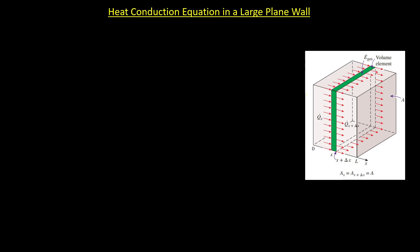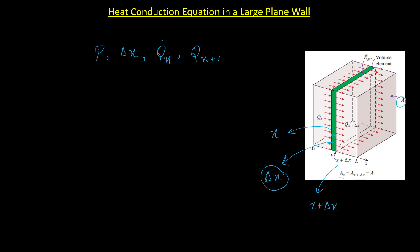For finding the heat conduction equation in a plane wall, we consider a thin element of thickness delta x. The area perpendicular to the direction of heat transfer is A. The density of this material is rho and the thickness is delta x. The heat transfer rate at distance x is Q_x dot, and at x plus delta x is Q_{x+Δx} dot.